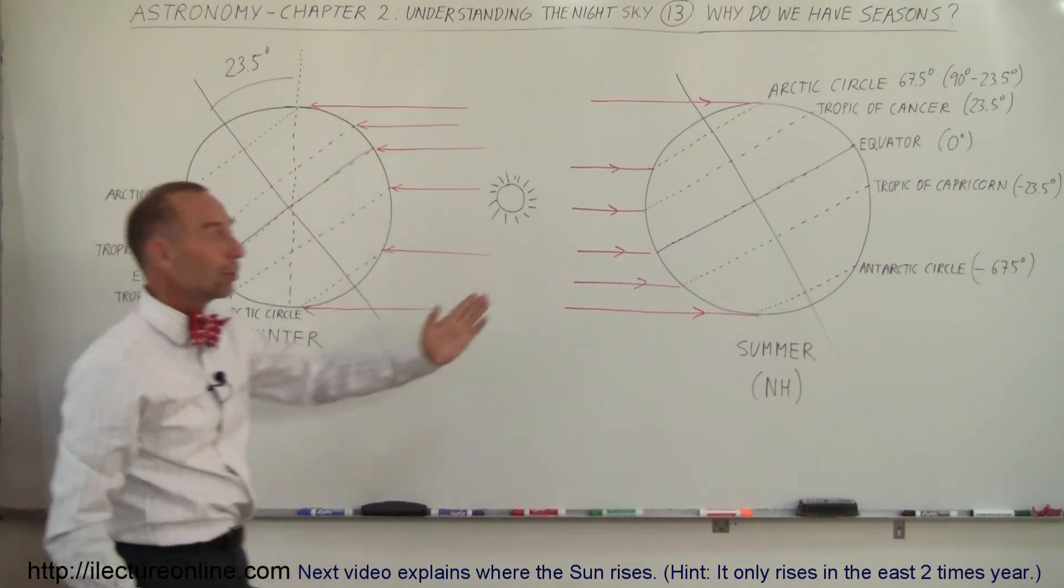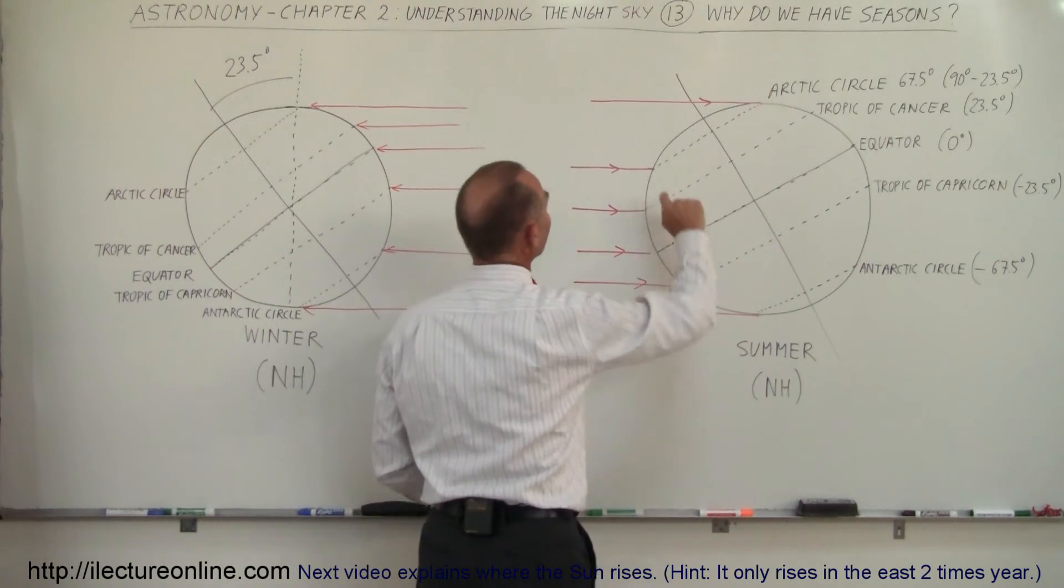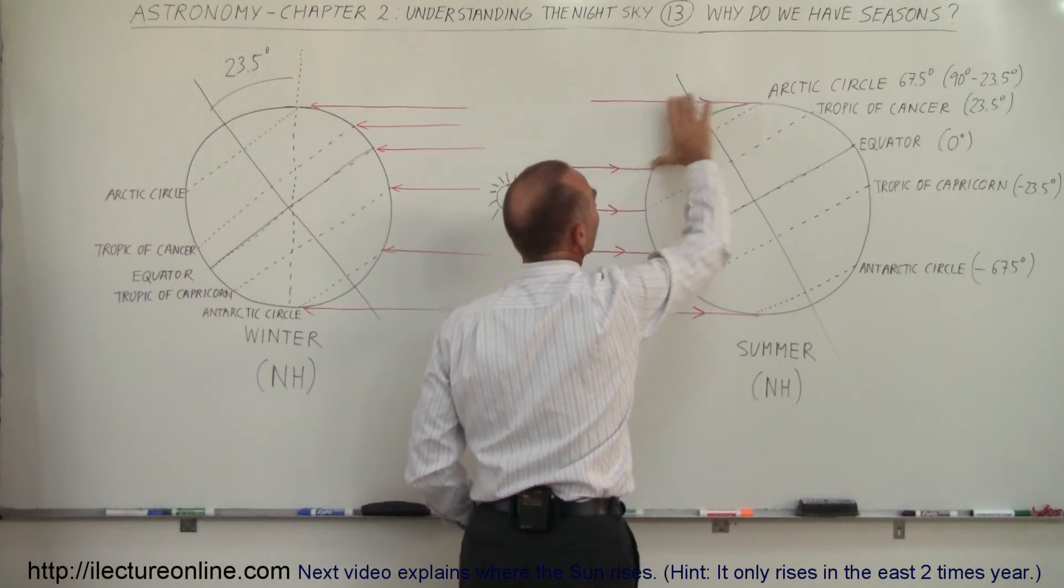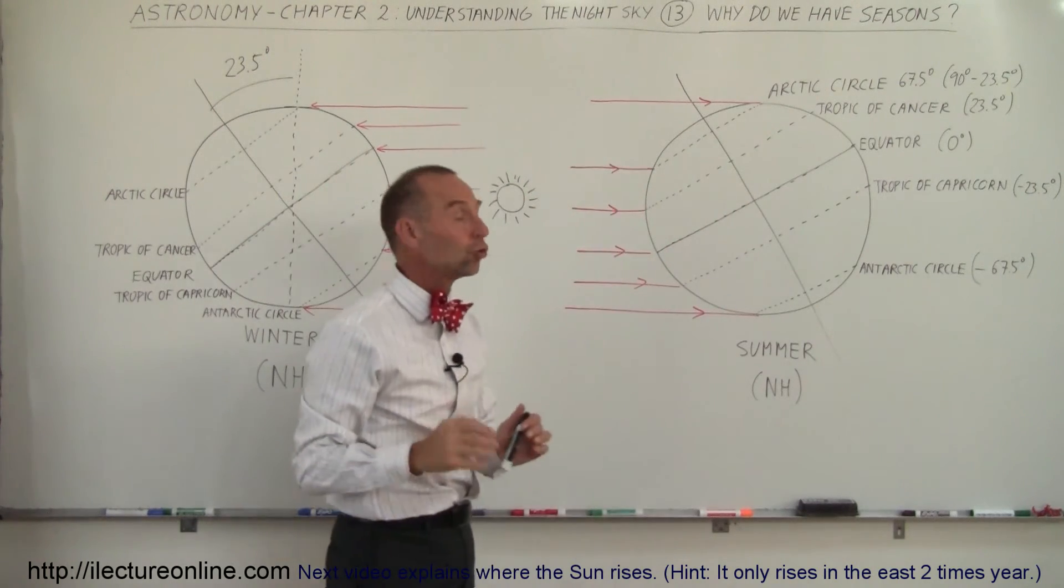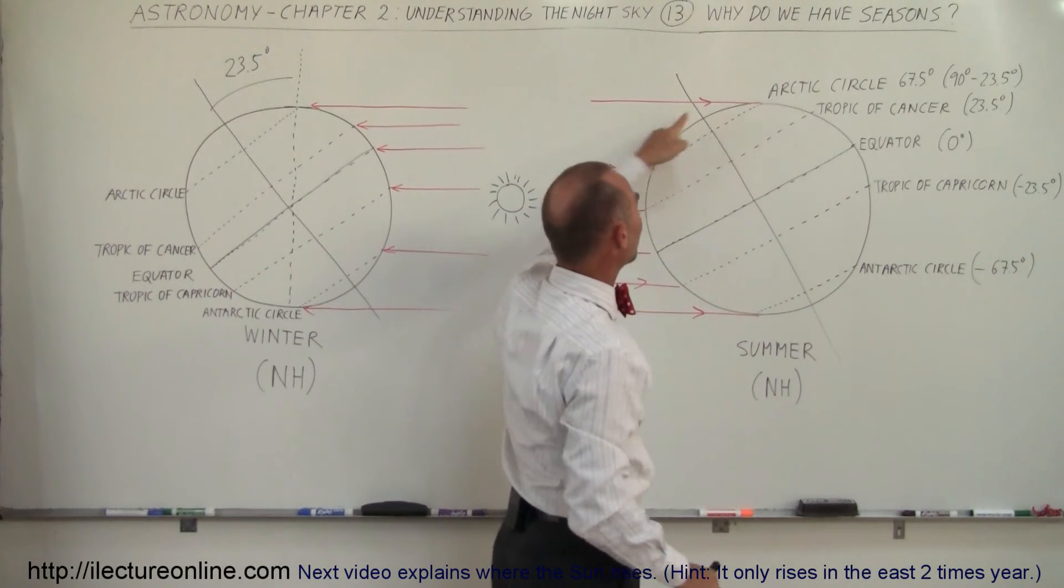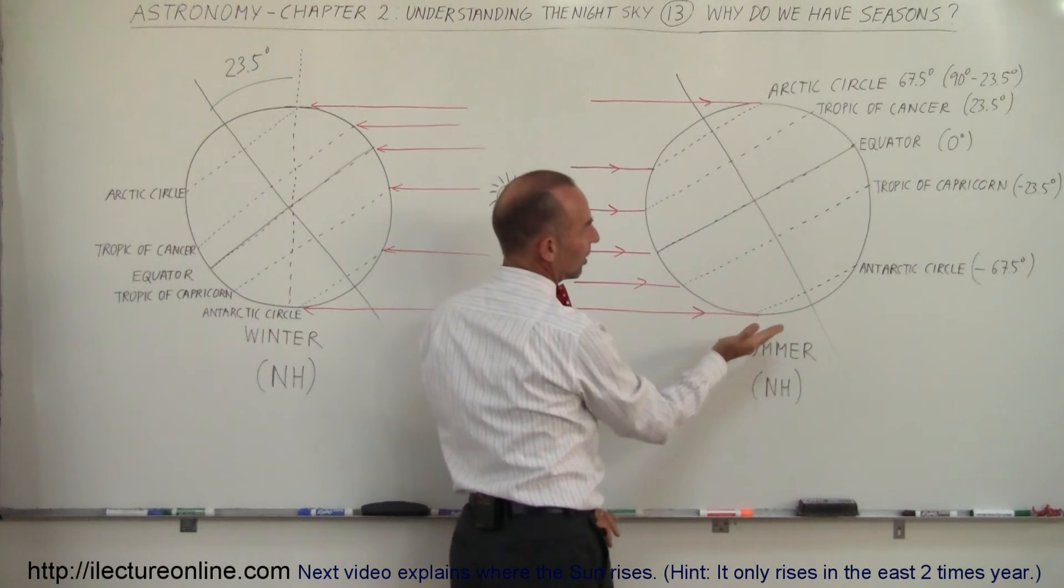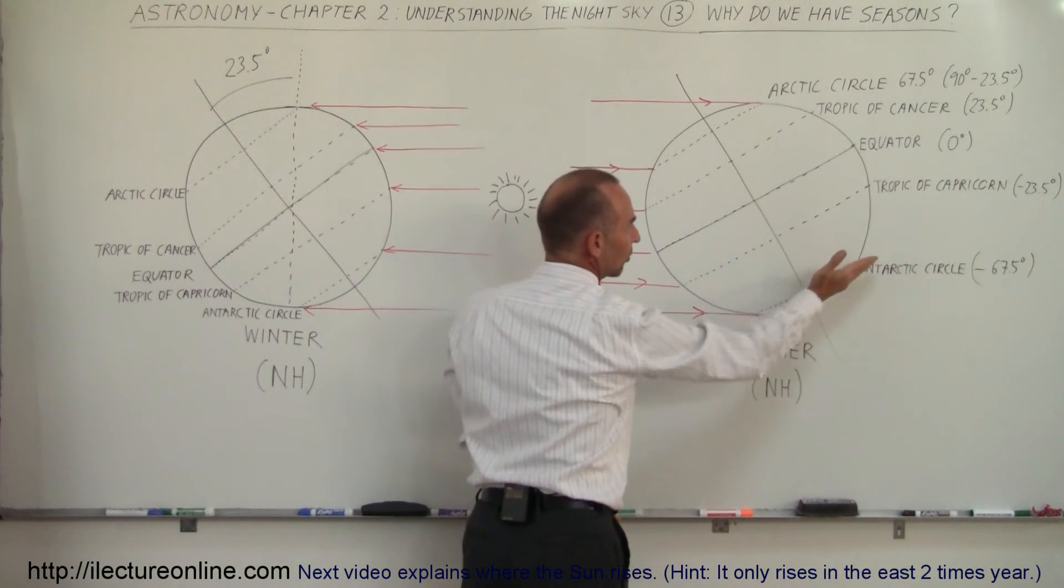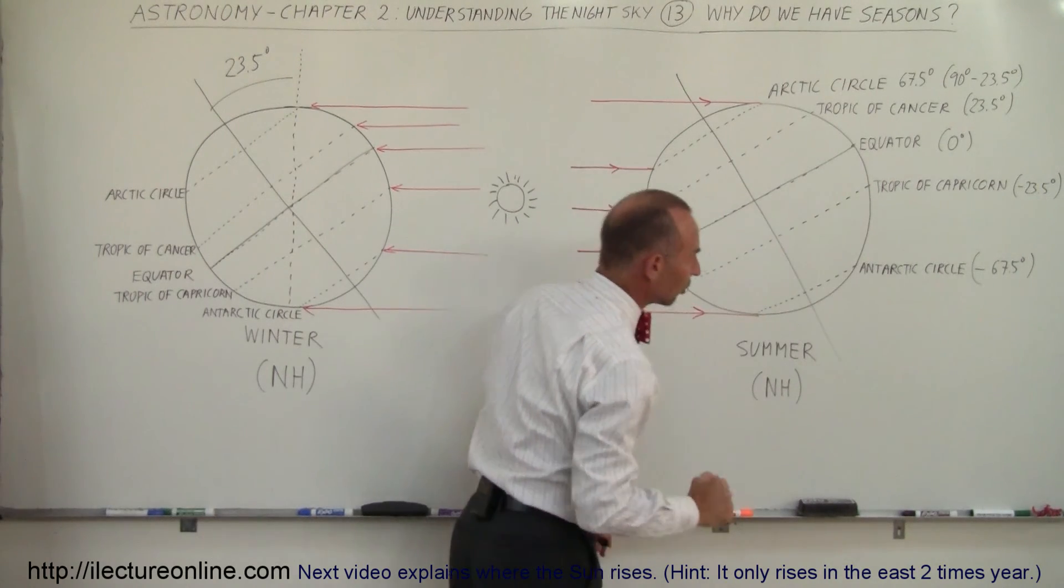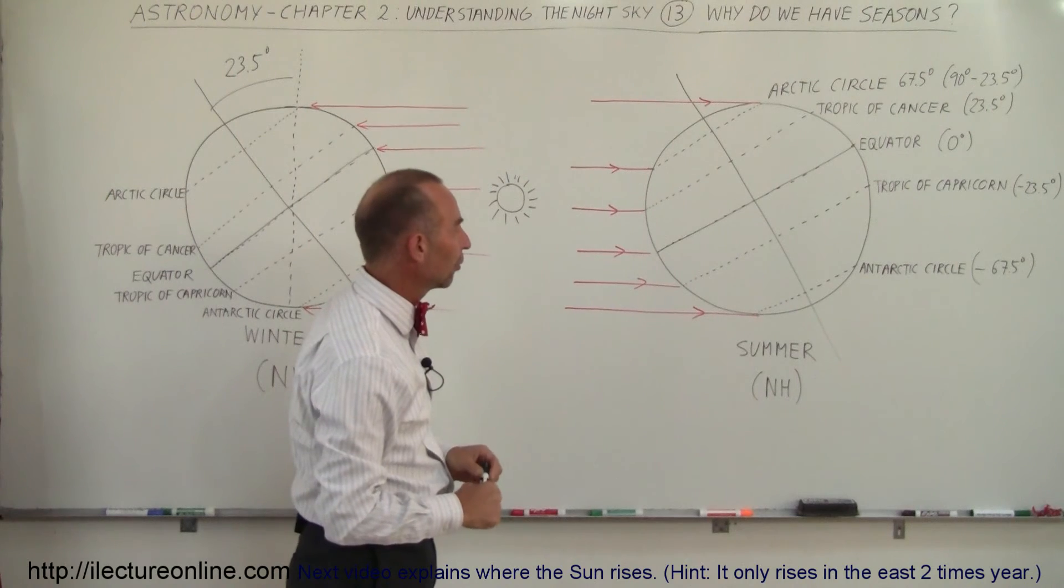Of course six months later when the earth is over here, the tilt is of course in the same direction. You can now see that the entire northern region here, the Arctic region is completely bathed in sunlight. That will happen on June the 21st. All this region all the way down to the Arctic Circle will see 24 hours of sunshine on that particular day and then in the southern hemisphere you can see that the entire Antarctic region below the Antarctic Circle will not receive any sunlight at all on June the 21st.